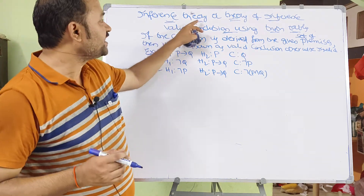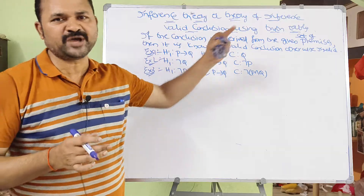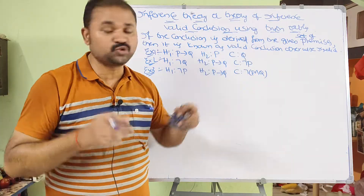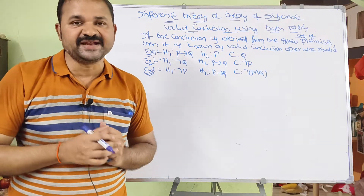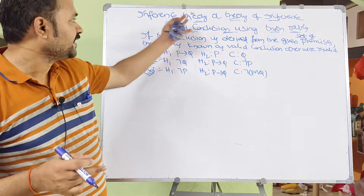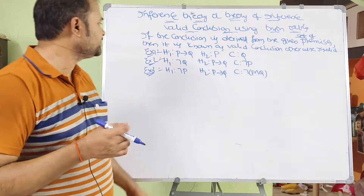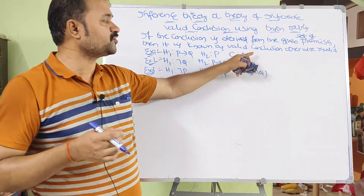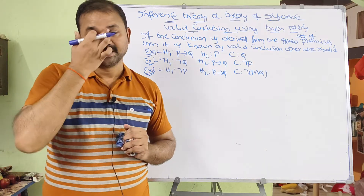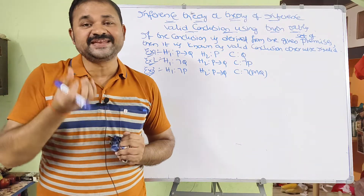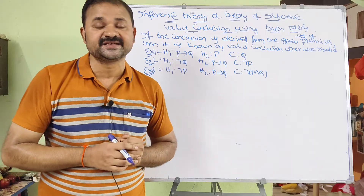Let us discuss inference theory, or theory of inference, for deriving valid conclusions using truth tables. We have two approaches: with the help of truth tables, and without truth tables using implication and equivalence laws. In this video we will focus on inference theory using truth tables. If a conclusion is derived from the given set of premises, it is a valid conclusion; otherwise it is an invalid conclusion.